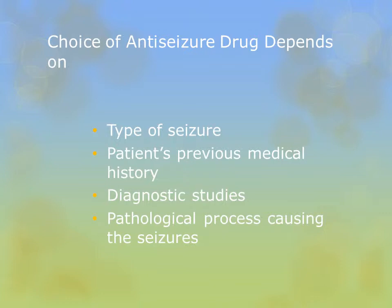As a general rule, pharmacologic control of seizures starts with one drug and we see what kind of control we get. They may go through several drugs before finding the right one that controls the seizure. Some patients will require multi-drug therapy, so they're going to be on two or more different types of drugs to control their seizures.